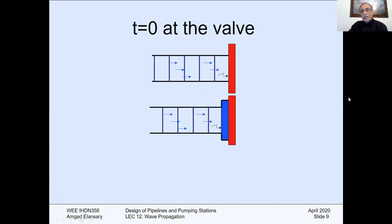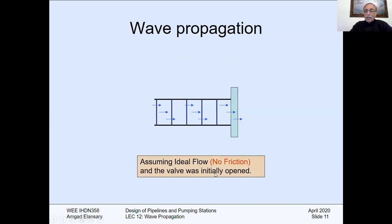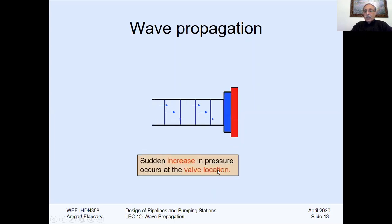When we close the valve, two things happen. In the blue color shown, the pipe is stretched and the fluid is compressed, and this moves upstream. Assuming ideal flow with the valve initially open, if we close it suddenly, a large force is needed to decelerate the fluid. This force appears in the system as pressure — there is a sudden increase in pressure at the valve location.